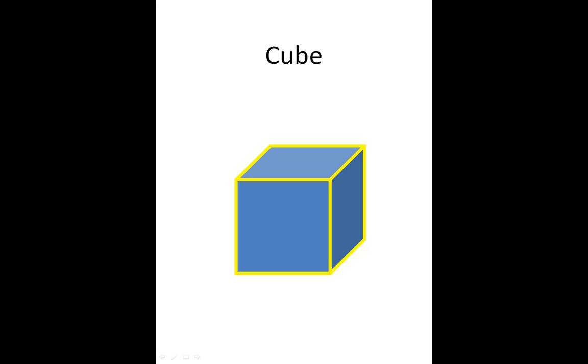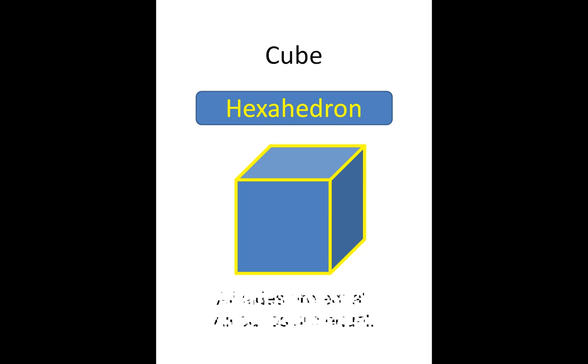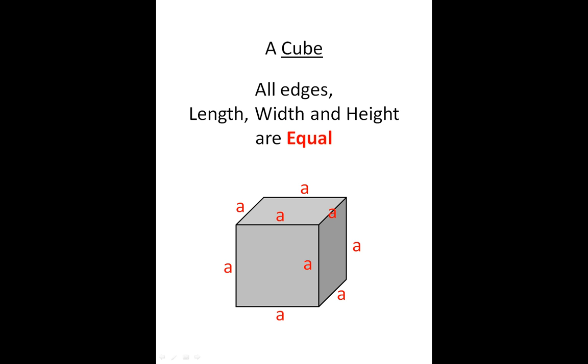Now, before we go, I wanted to mention a cube because a cube is a special type of hexahedron. It's a hexahedron or a rectangular prism in which all the sides are equal and all the edges are equal. So we have our edges here in yellow, and all of them are equal. And that means our length, our width, and our height are all equal. So if our length was A, our width would be the same, and our height would be the same. And it would all be the same length.